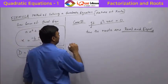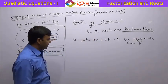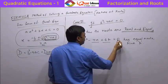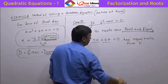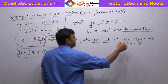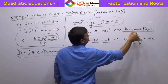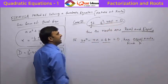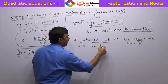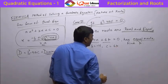Let us look at some examples. If this equation 3x squared minus 4x plus 6p equals 0 has equal roots, find p. If it has equal roots, we can directly apply this condition. If the roots are equal, this condition must have been satisfied. Here a is equal to 3, b is equal to minus 4, and c is equal to 6p. Please be careful in picking up the values from the equation.